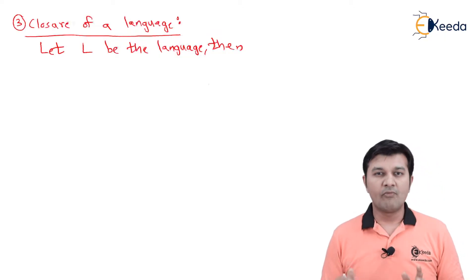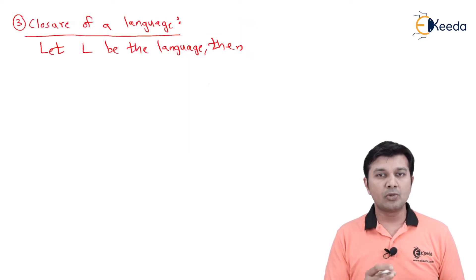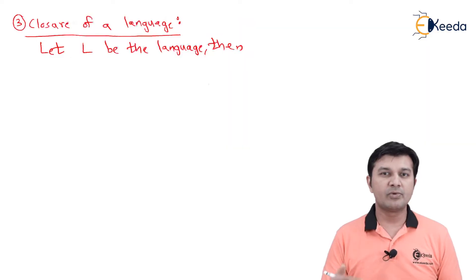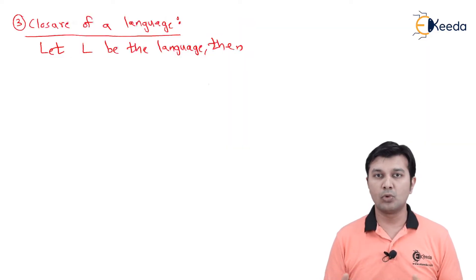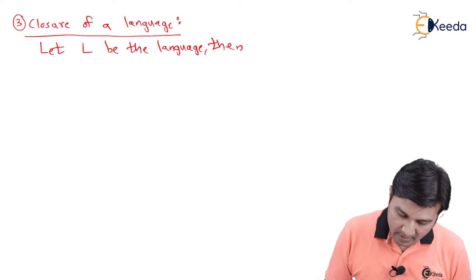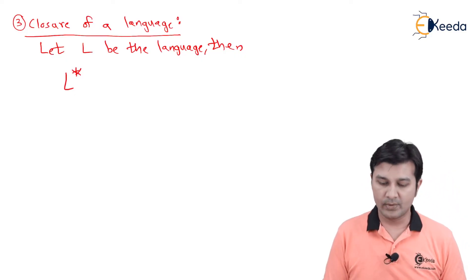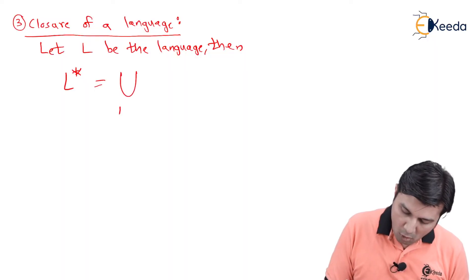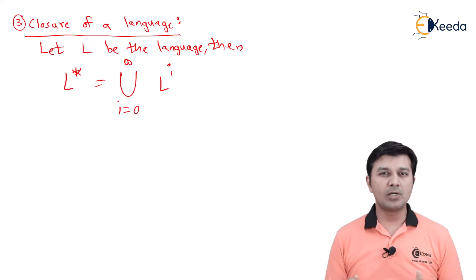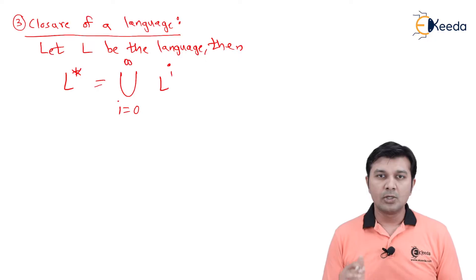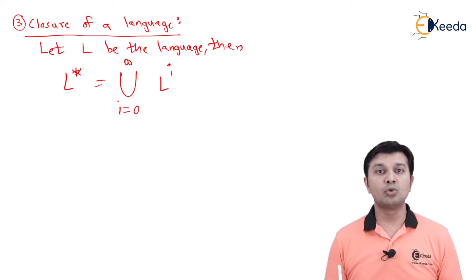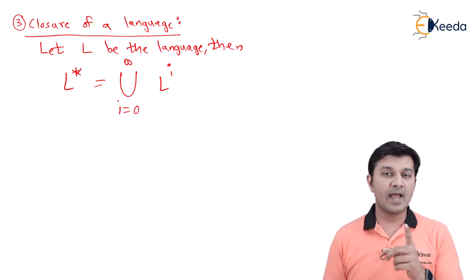The next definition is the closure of a language. This is a very important property — a de facto standard we will carry throughout the syllabus, like a legacy. If you don't understand closure, everything after this will be a big problem. Let L be the language; then L star is called the closure of the language, defined as the union of all L^i where i goes from 0 to infinity. It is denoted by L star and runs from 0 to infinity.